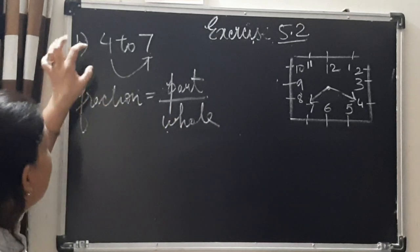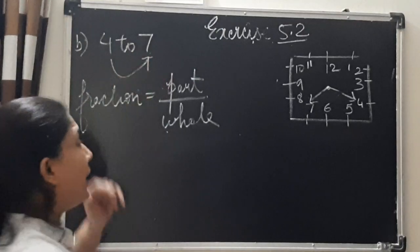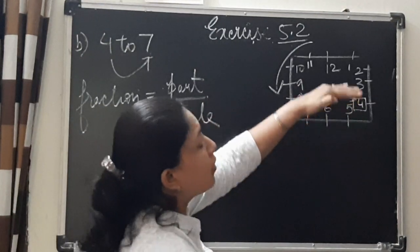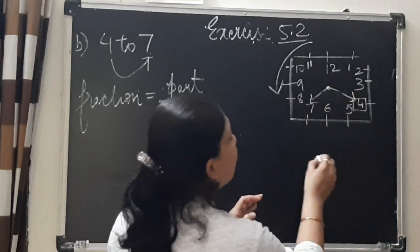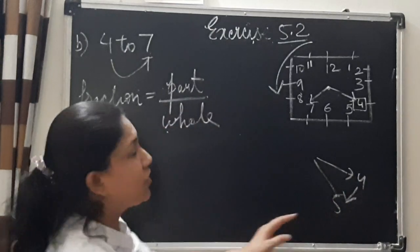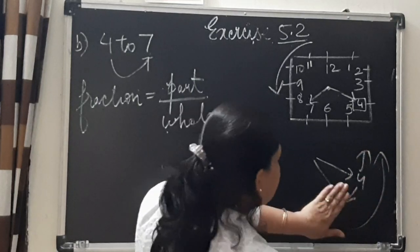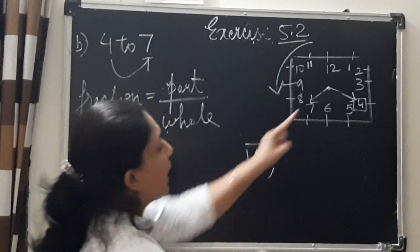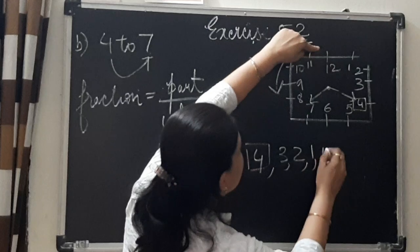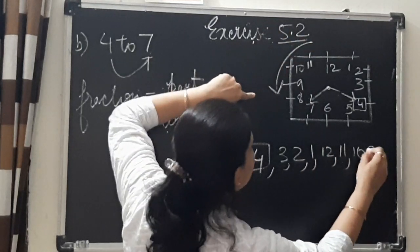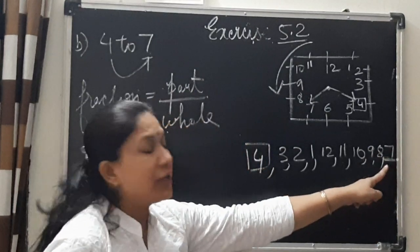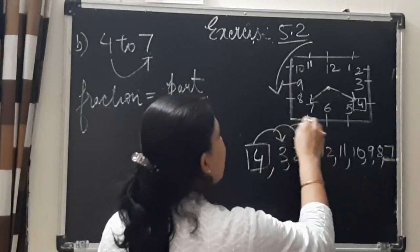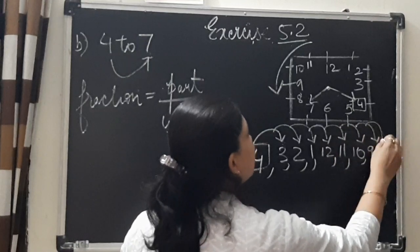Now let us discuss the same question but if the hour hand is at 4 and turns to 7 in anti-clockwise direction. From 4, going anti-clockwise, the hand will first point to 3, then 2, then 1, then 12, then 11, then 10, then 9, then 8, and finally it will reach 7. So count from 4: the hand pointed to 3, 2, 1, 12, 11, 10, 9, 8, 7 — that is 9 numbers.